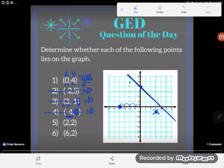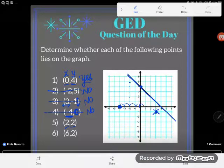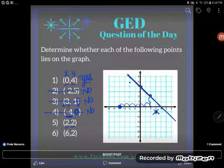Now let's take a look at the point (2,2), positive 2, positive 2. So 2 in the horizontal direction, 2 in the vertical direction. I sure do end up on my line. That's a yes.